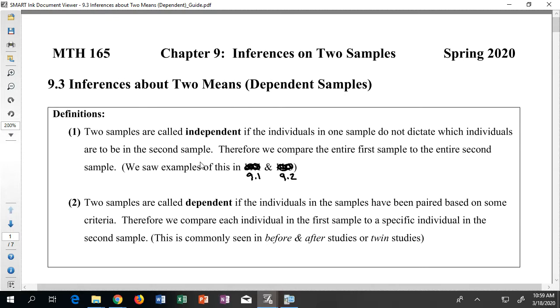If we take a look here, we're going to see that in 9.3 we're talking about the inferences we can form for two averages, for two means.